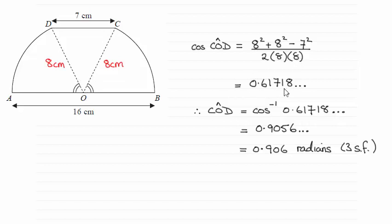As you can see, that gives us 0.61718 and so on. And then to get the angle COD, we take the inverse cosine of this value here.